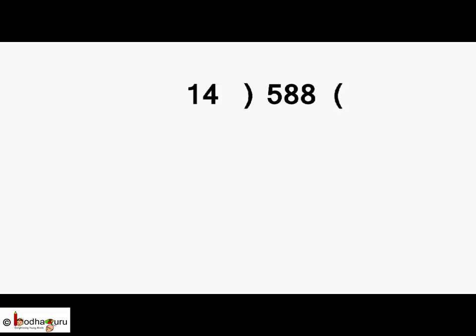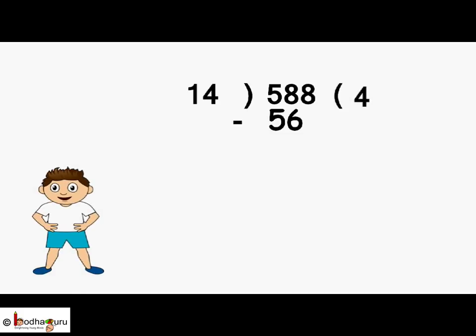1 times 14 is equal to 14. 2 times 14 is equal to 28. 3 times 14 is equal to 42. 4 times 14 is equal to 56. So we write 4 here and 56 here. 58 minus 56 is 2. Now 8 comes down, it becomes 28. 2 times 14 is equal to 28. So we write 2 here and 28 down. Remainder is 0. So everyone has to contribute 42 rupees.